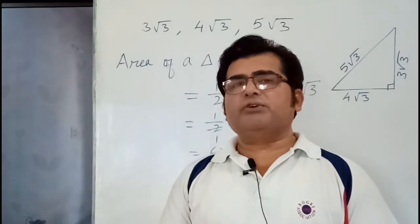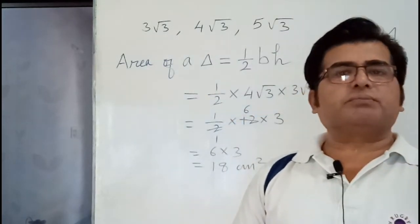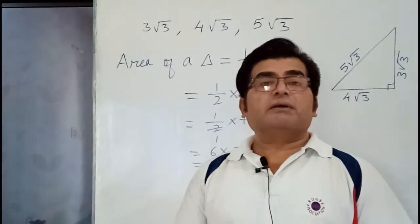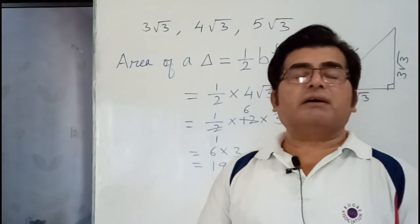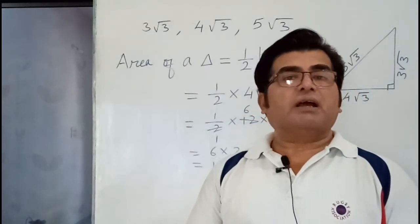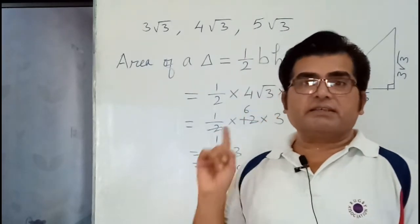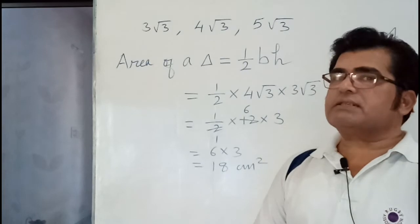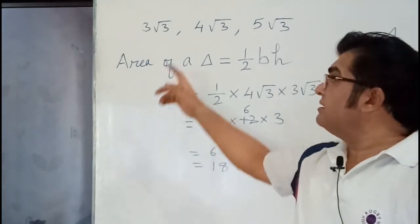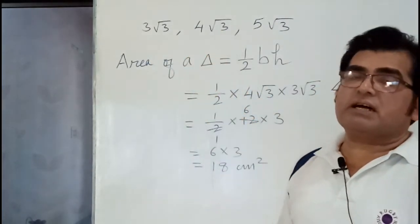So you need not run to Heron's formula. Heron's formula is the longer method that we should apply when the base and altitude or height of a triangle is not given. But when it is a right angle triangle, its height is given. But the question is, which is the base and which is the height?